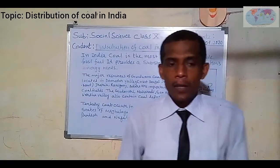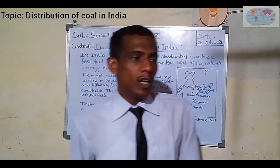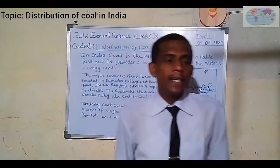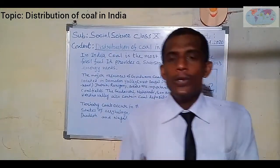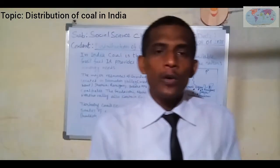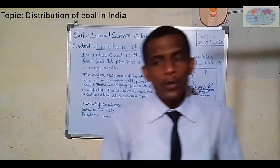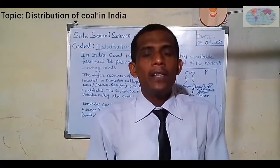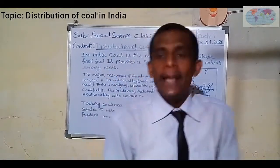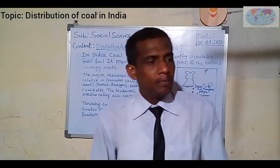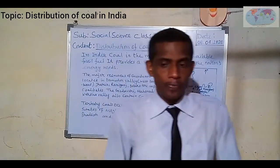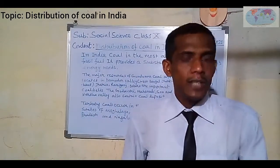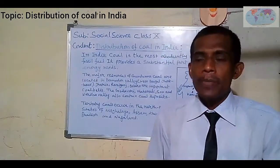Coal is formed by the compression of plants over a long geological time period. According to geological time, coals are mainly two types or two major categories: Gondwana coal and Tertiary coal. Gondwana coal means coal formed a minimum of two hundred million years old, and Tertiary coals are mainly 55 million years old. Gondwana coal is the most important and finest coal compared to Tertiary coals.